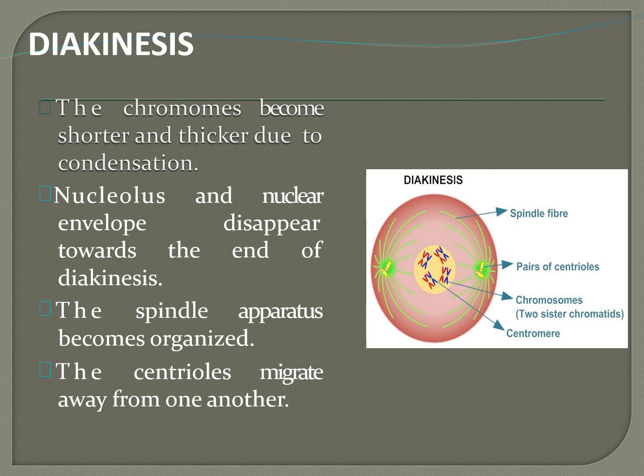Diakinesis is the last stage of prophase first. The chromosomes become shorter and thicker due to condensation. The nucleolus and nuclear envelope start disappearing towards the end of diakinesis, and formation of the spindle apparatus is organized — spindle fibers and astral rays start developing. The centrioles migrate away from one another. This marks the end of prophase first.